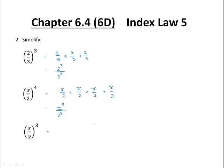x divided by y cubed in expanded form would look like this. In the numerator we have x times by itself 3 times, or x cubed, and in the denominator y times by itself 3 times, or y cubed. So in general, if there is a power outside a bracket containing a fraction, the power applies to both parts of the fraction — that is the numerator and the denominator. This is our fifth index law.